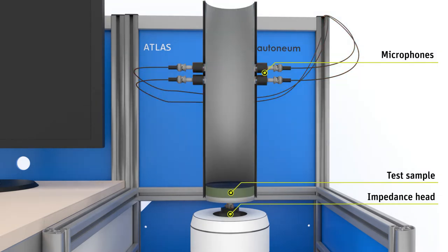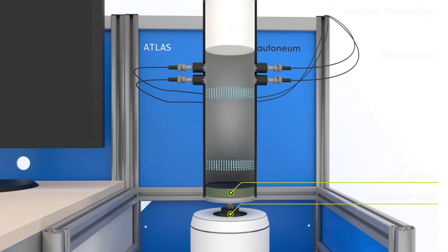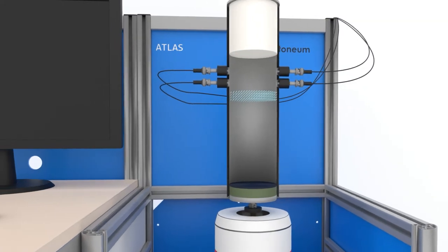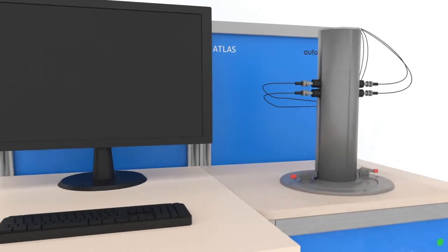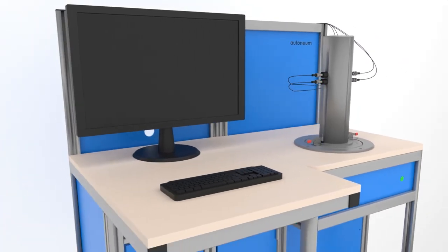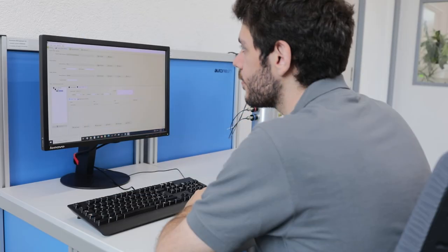First, with the test sample properly positioned on the vibrating piston and then without it. From the difference between the sound power radiated inside the tube, with and without test sample, the normal incidence insertion loss of the sample is determined.